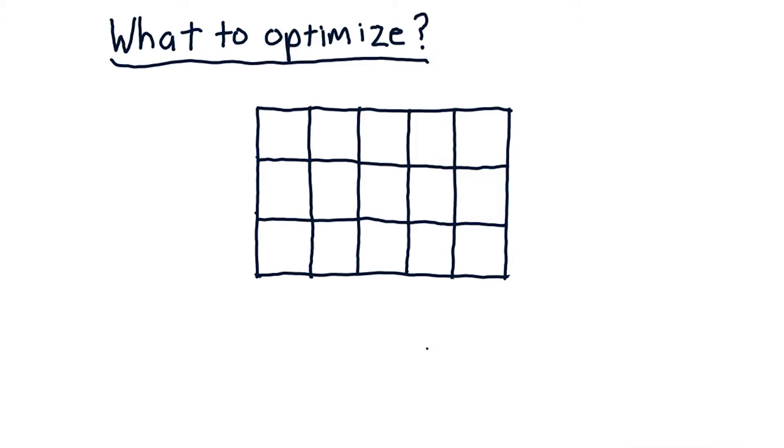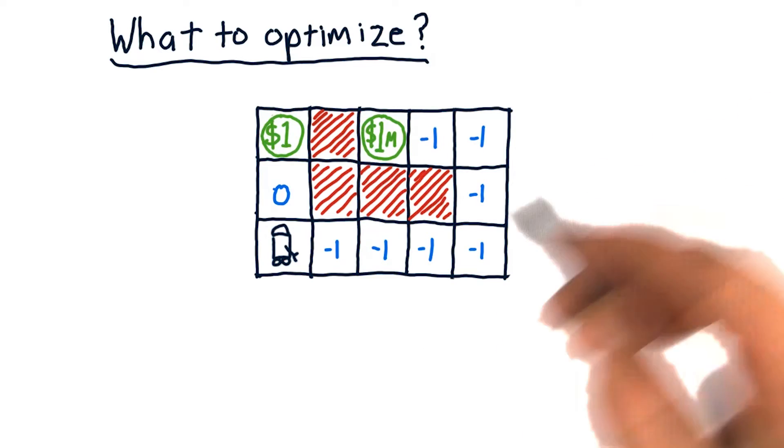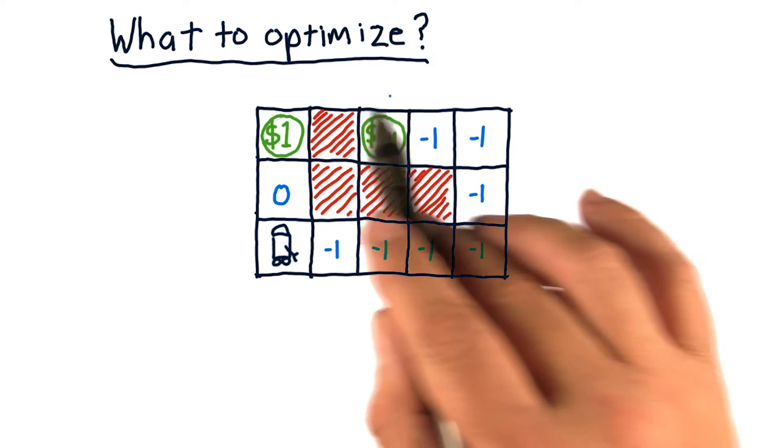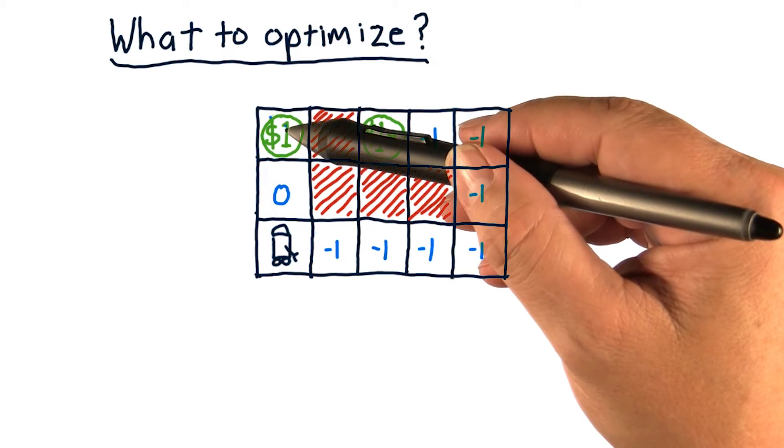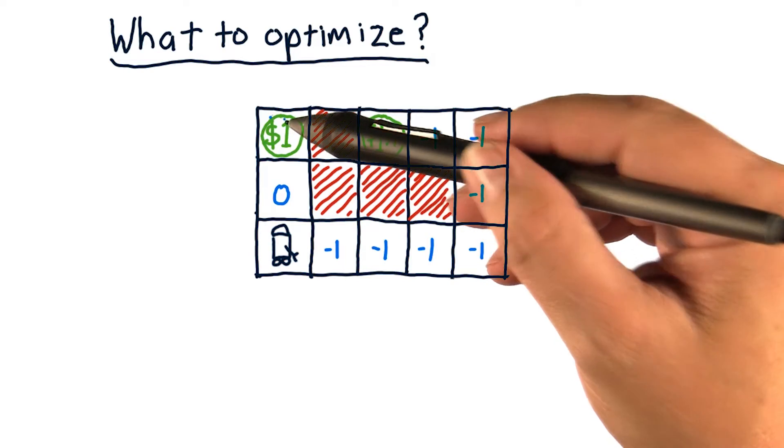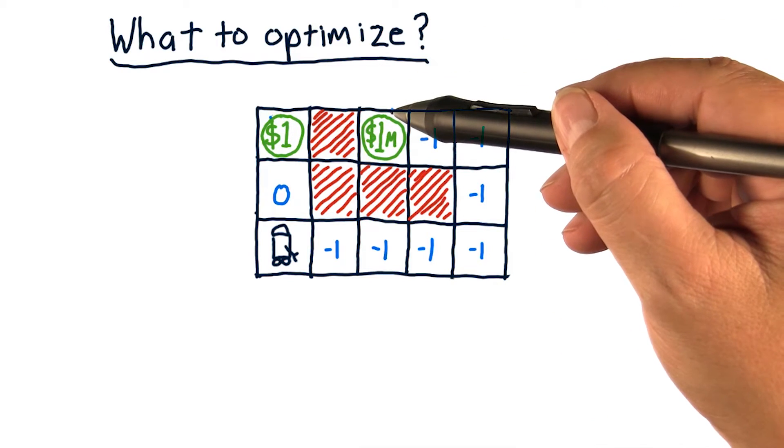So to consider that and illustrate that, I'm going to show you a little maze problem here, and we'll think about what the robot ought to do that would be optimal in this maze. So here's our robot, and here's the challenge. We have a reward here of one dollar, and a reward over here of one million dollars.